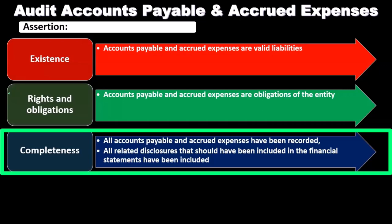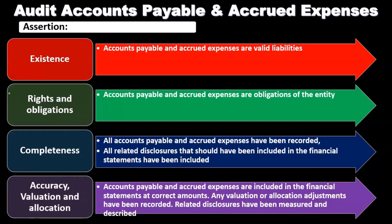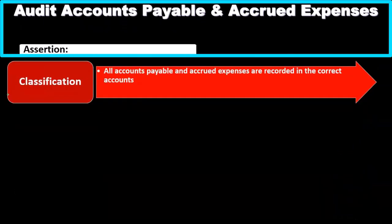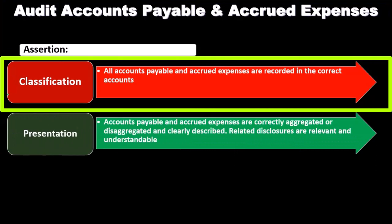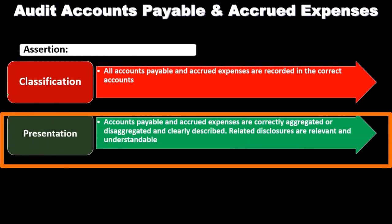For accuracy, valuation, and allocation, accounts payable and accrued expenses are included in the financial statements at correct amounts, any valuation or allocation adjustments have been recorded, and related disclosures have been measured and described. The classification assertion requires all accounts payable and accrued expenses to be recorded in the correct account. The presentation assertion requires they are correctly aggregated or disaggregated, clearly described, and that related disclosures are relevant and understandable.